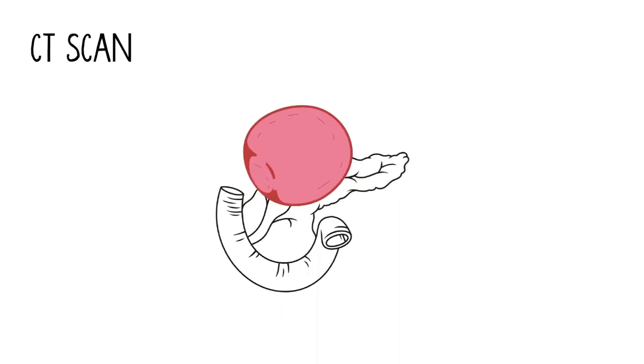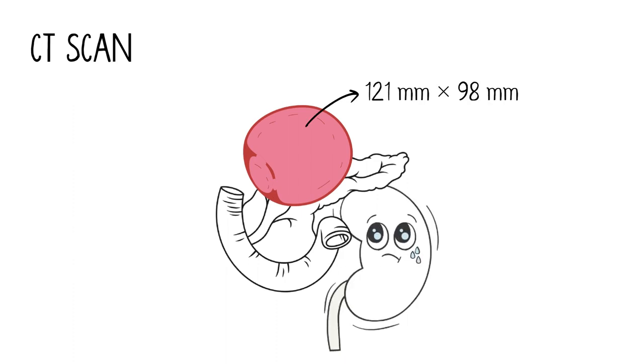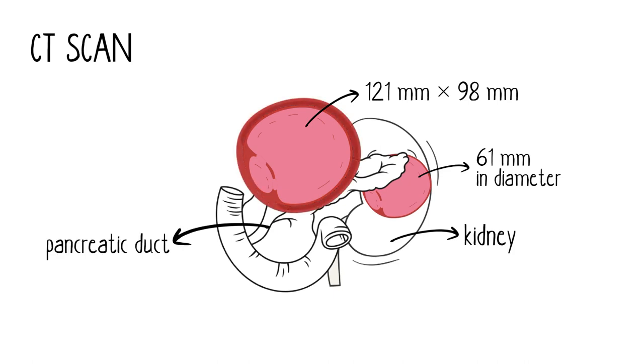CT scan revealed the cystic lesion in the body of the pancreas, measuring 121 millimeters times 98 millimeters, adjacent left renal cyst measuring 61 millimeters in diameter. The wall of the pancreatic cyst was thickened. The pancreatic ducts were not dilated.